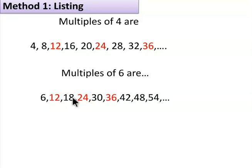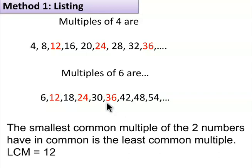Multiples of 6 are 6, 12, 18, 24, 30, 36, 42, 48, 54, and so on. The smallest common multiple of 4 and 6 is 12. Hence, LCM equals 12.